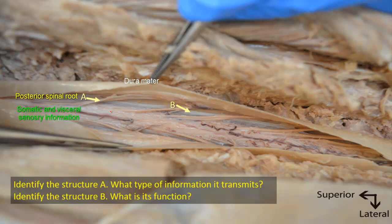B is the ligamentum denticulatum, or denticulate ligament, which extends from the surface of the cord across the subarachnoid space to insert into the inner surface of the dura. It is made of pia-arachnoid tissue and extends midway between the anterior and posterior roots of spinal nerves. The anterior roots cannot be seen here because they are located anterior to the ligament and are obscured by it in this view.